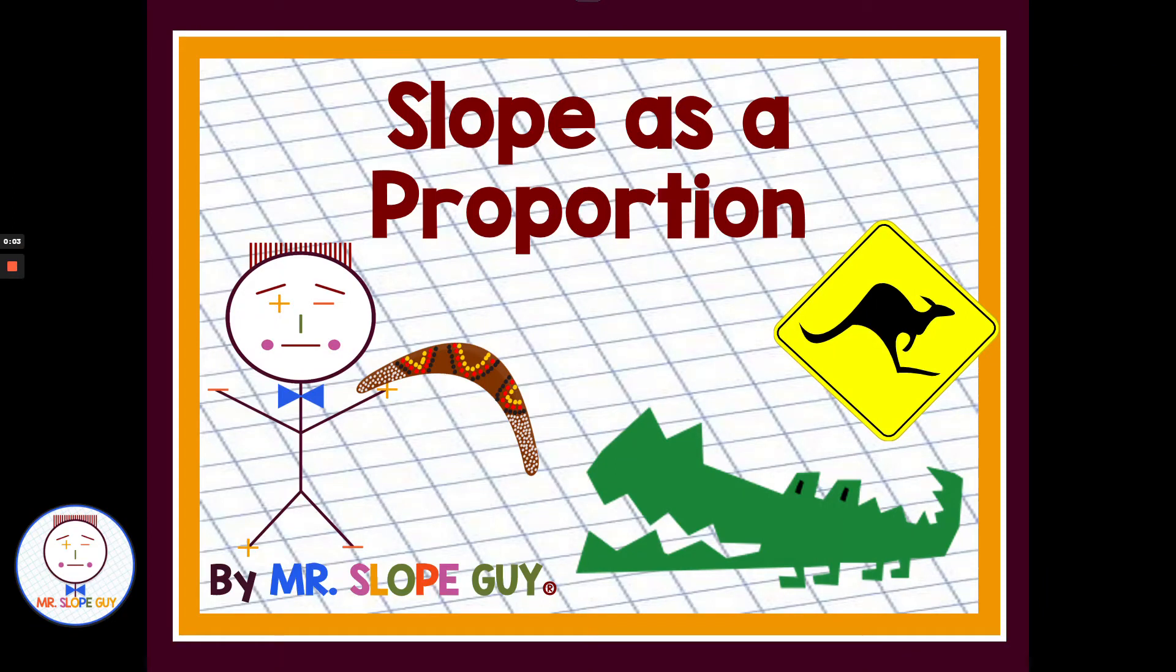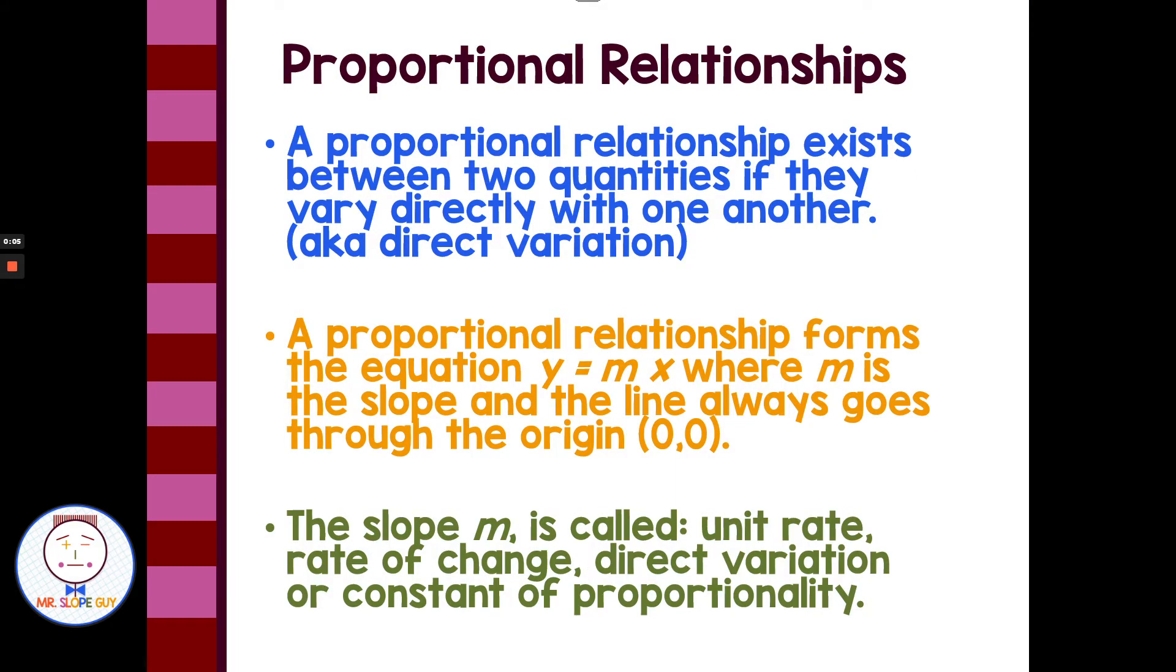Slope as a proportion. If we look at slope as a proportion, a proportional relationship exists between two quantities if they vary directly with one another. This is called direct variation. A proportional relationship forms the equation y equals mx, where m is the slope, and the line always goes through the origin, 0, 0.